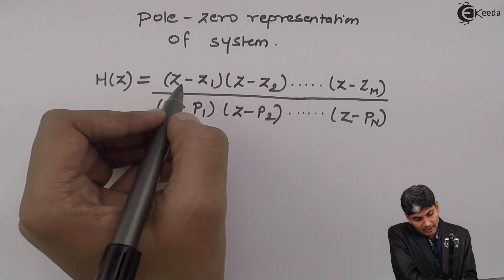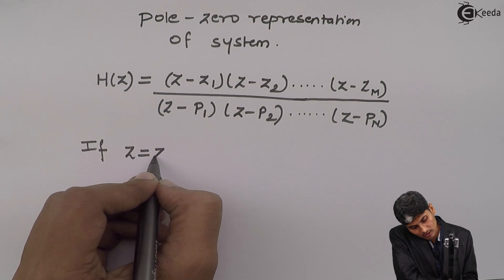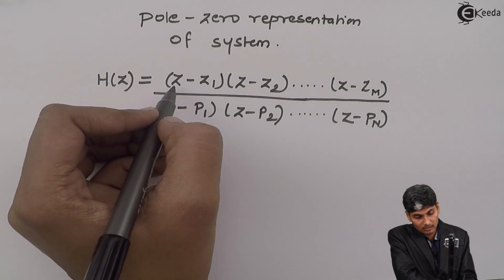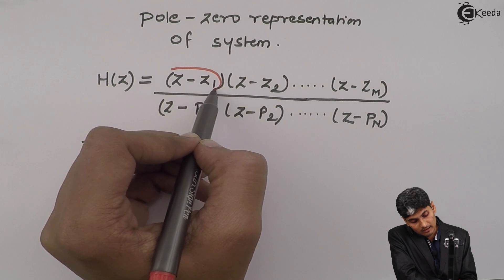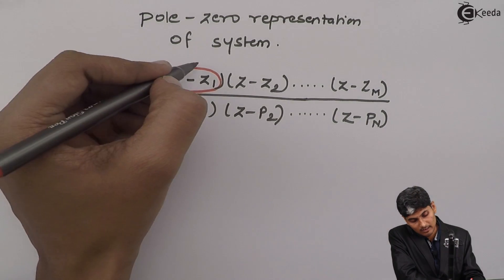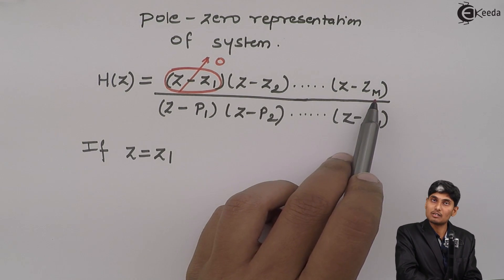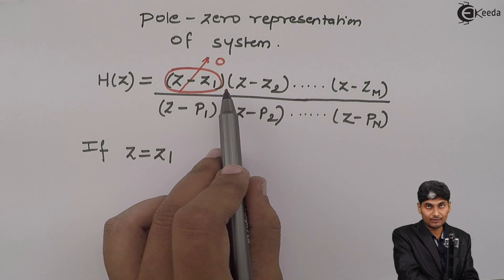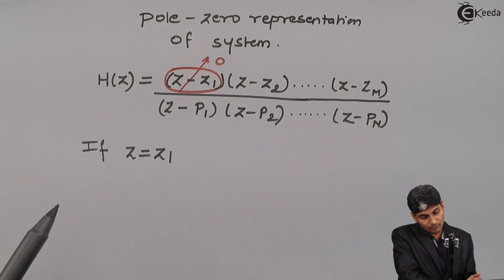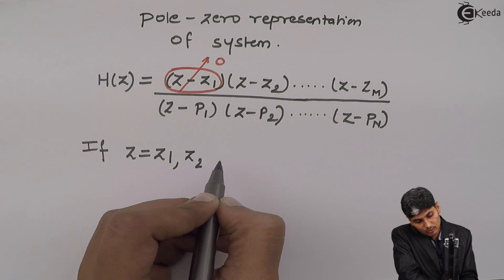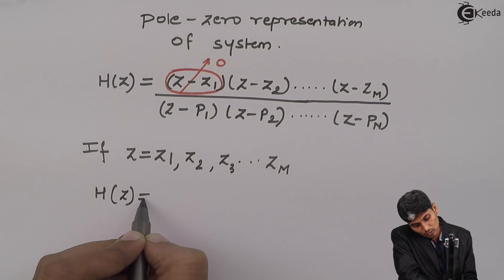Now, what does this numerator and denominator stand for? If I put z equal to z1, then this term will turn to 0, and this will cancel out to 0. If you multiply 0 by any number it will convert to 0, so the numerator of this polynomial will go to 0. And 0 divided by any number results into 0. So if we put z equal to z1, z2, z3, and so on till zm, then H(z) will go to 0.